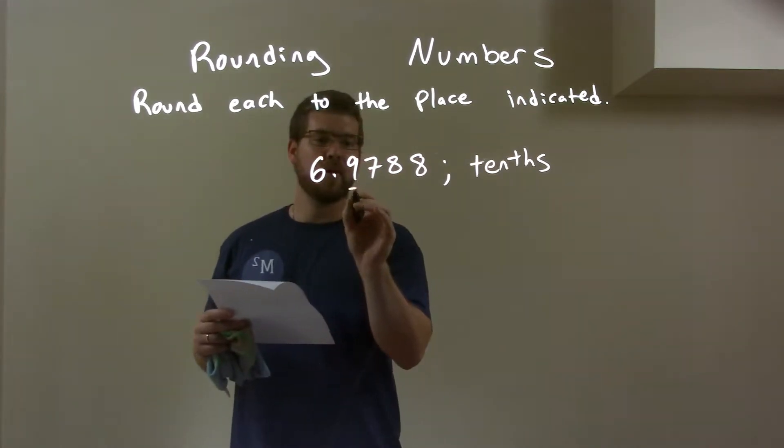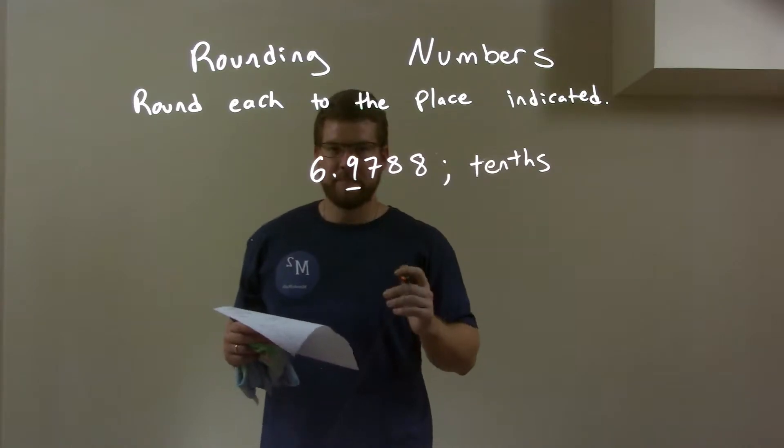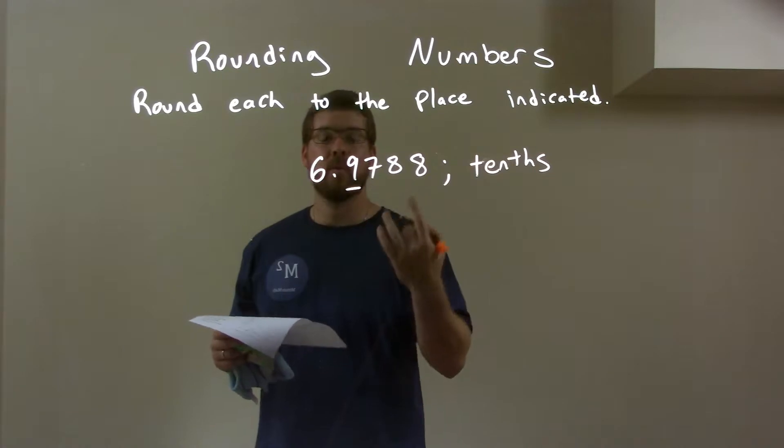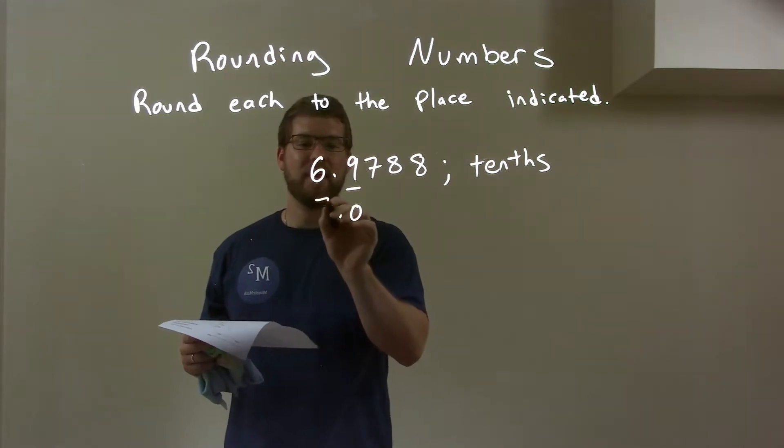Well the tenths place is right here on that nine, okay. Well that nine, I look to the right. That seven is between five and nine, causing this nine to round up by one. Well that nine becomes a ten. So we have a zero here.